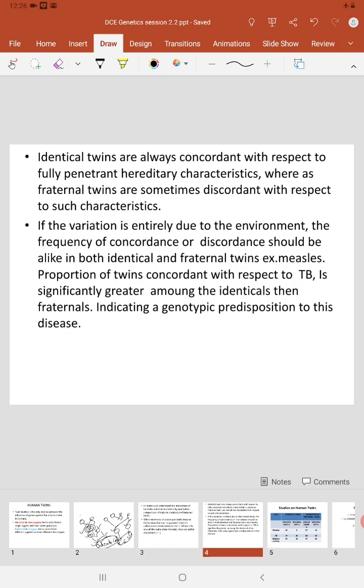Obviously, identical twins are always concordant with respect to fully penetrant hereditary characteristics, whereas fraternal twins are sometimes discordant with respect to such characteristics. If the variation in a trait is entirely due to environment, then the frequency of concordance or discordance should be the same, both among identical and non-identical twins.